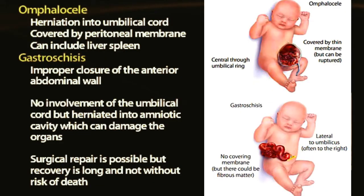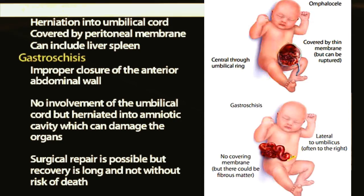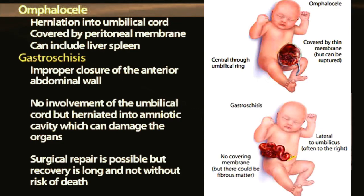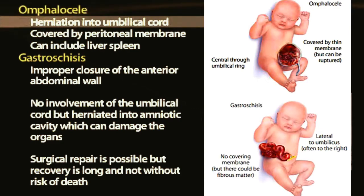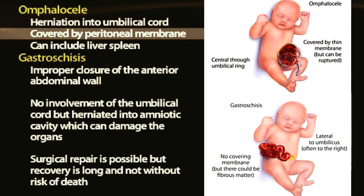Here we're looking at two possibilities as a result of lateral folding errors. One is the omphalocele. In this case, the omphalocele is a herniation into the umbilical cord, allowing the organs to be covered by peritoneum. That peritoneal membrane in some ways protects the organs.